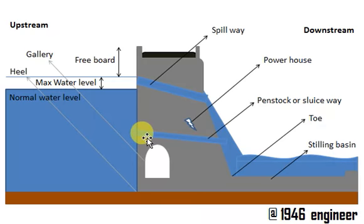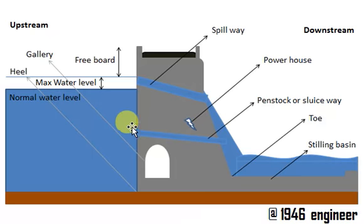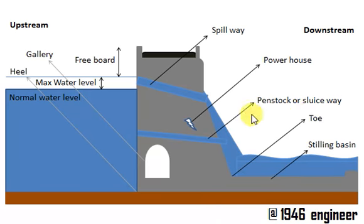The penstock or sluiceway is a pipe which collects water from the upstream side and is used for the generation of hydroelectricity in the powerhouse. This water is used to run the turbines and generate electricity using the powerhouse, and then leaves water into the downstream side. That is the purpose of the penstock or sluiceway — both are the same.